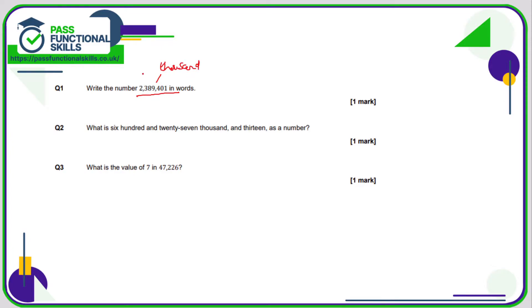The next comma represents million. So this number in words is two million, 389,401.